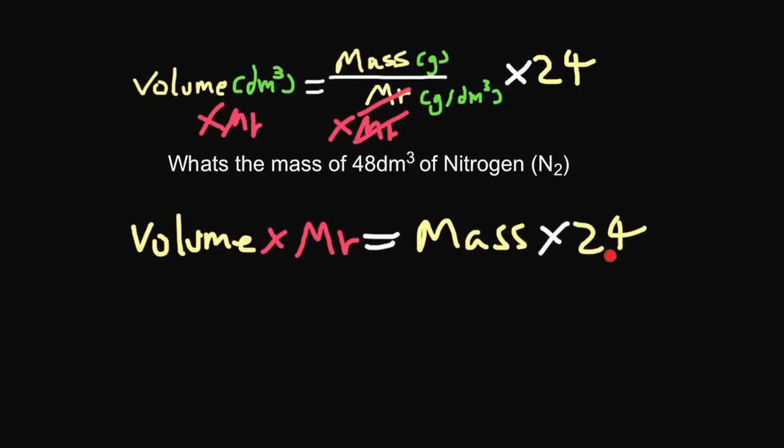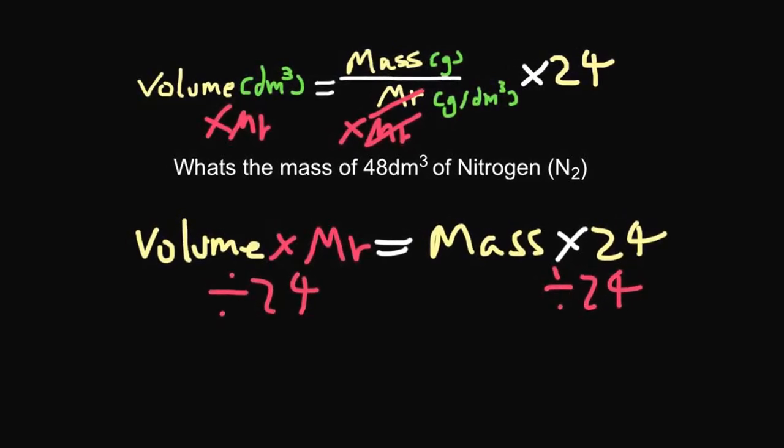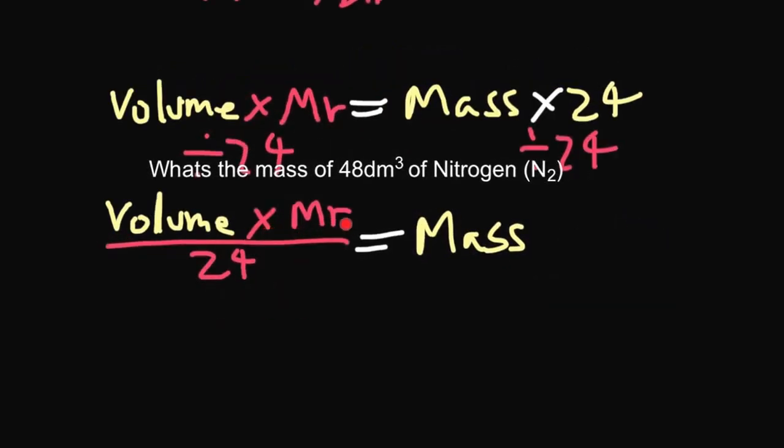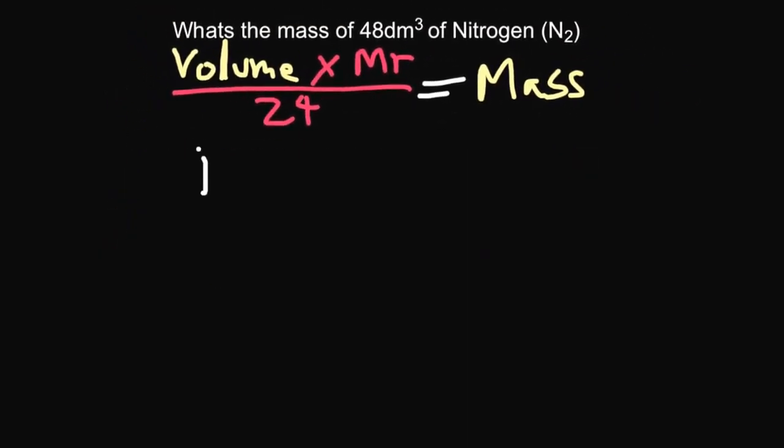So we want to get rid of the 24 now, because we want mass on its own. So the opposite of timesing by 24 is dividing by 24. So if we divide by 24 on both sides, what that gives us is volume times Mr divided by 24 equals mass. So we know the volume, which is 48.